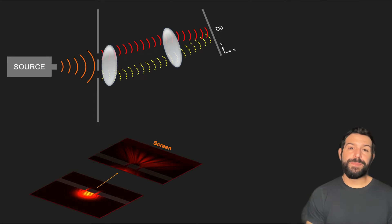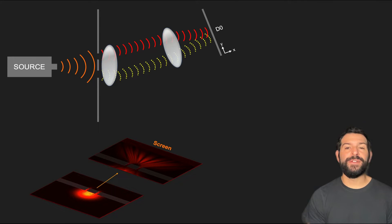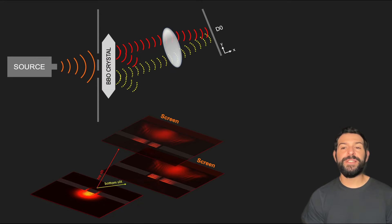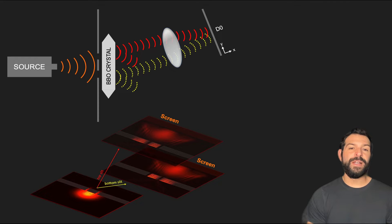A helpful perspective to grasp this idea is to recognize that, unlike the conventional double-slit experiment where the waves emerging from the top and bottom slits directly interfere with each other, the creation of the entangled pair of photons in this scenario splits the waves from the top and bottom slits into two separate and isolated branches of the global wave function. It is as if these two waves now lived in two separate universes.